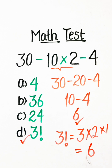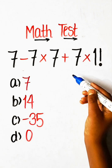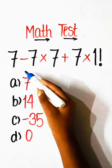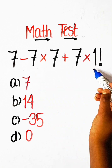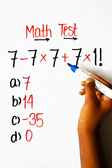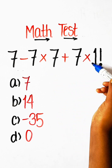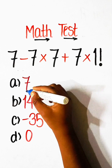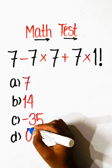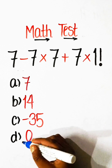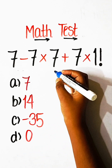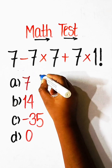Hello everyone, welcome back to my YouTube channel. In this video we will solve this math equation: 7 minus 7 multiplied by 7 plus 7 multiplied by 1 factorial equals to what? Option A: 7, Option B: 14, Option C: minus 35, Option D: 0. So let's solve this.